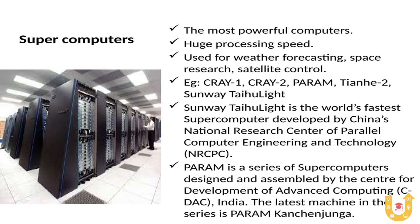Supercomputers are the most powerful computers with huge processing speed. They are used for weather forecasting, space research, satellite control, and more. Examples include CRAY-1, CRAY-2, PARAM, Tianhe-2, and Sunway TaihuLight. The world's fastest supercomputer is Sunway TaihuLight, developed by China's National Research Center of Parallel Computer Engineering and Technology (NRCPC). PARAM is a series of supercomputers designed and assembled by the Centre for Development of Advanced Computing (C-DAC), India, with the latest machine being PARAM Kanchanjunga.